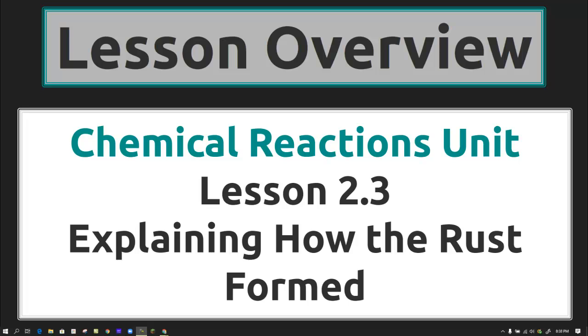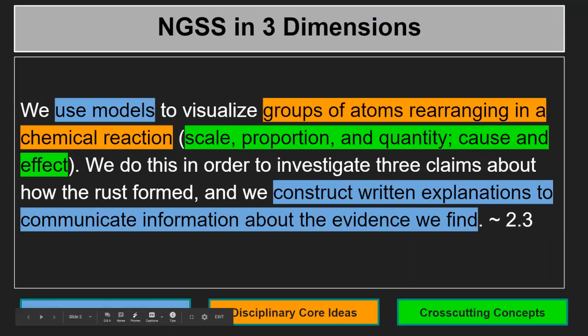Lesson Overview — Chemical Reactions Unit, Lesson 2.3: Explaining How the Rust Formed. In this lesson we use models to visualize groups of atoms rearranging in a chemical reaction, which shows scale, proportion, and quantity along with cause and effect. We do this in order to investigate three claims about how the rust formed, and we construct written explanations to communicate information about the evidence we find.